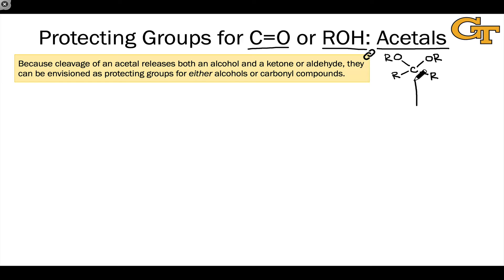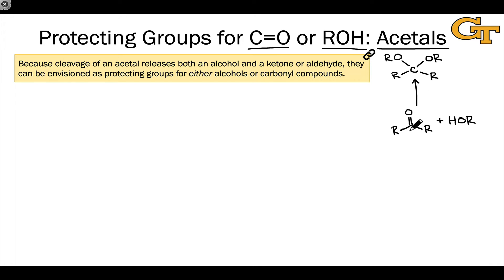To form an acetal, we combine a ketone or aldehyde with the general structure R-C double bond O, and an alcohol. Because two things come together to form this functional group, we can think of it as a protecting group for either a ketone or aldehyde or the alcohol, depending on which of these compounds is our compound of interest in the course of the synthesis. The other beautiful thing about acetals is that the protection and deprotection steps are completely reversible, and reversible in a very straightforward way.